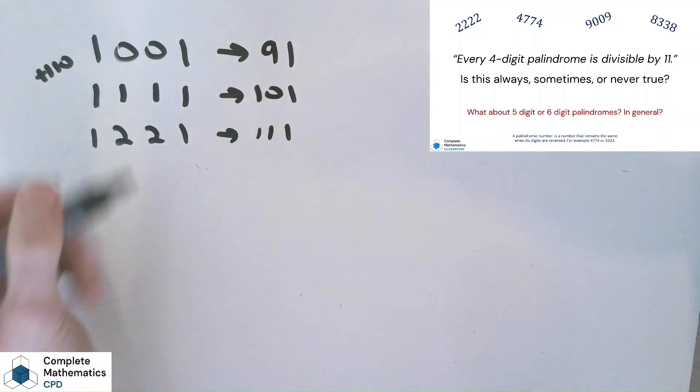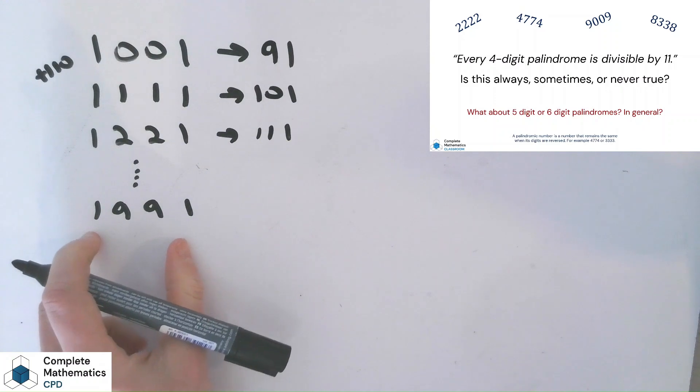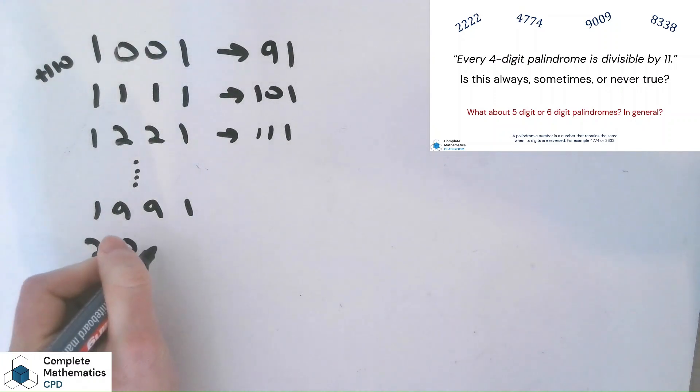Now, that would be nice if it worked all the way, but it doesn't, because it falls down when we get to 1991. Because the next palindrome after that, well, we obviously can't just add one to these anymore. It's the thousands and the units that change. The next one after this is 2002.